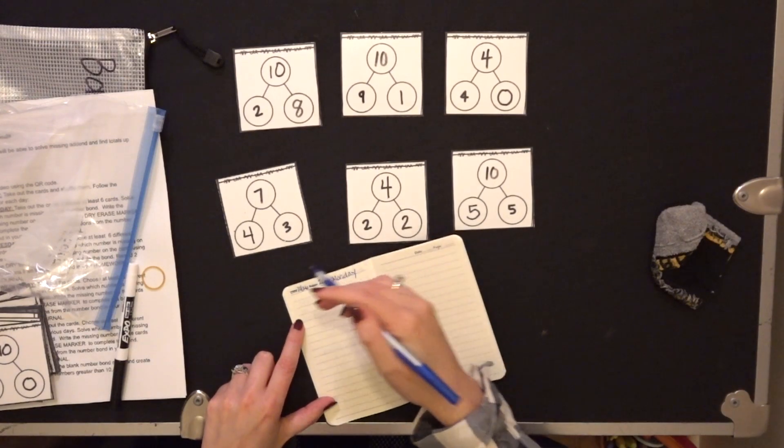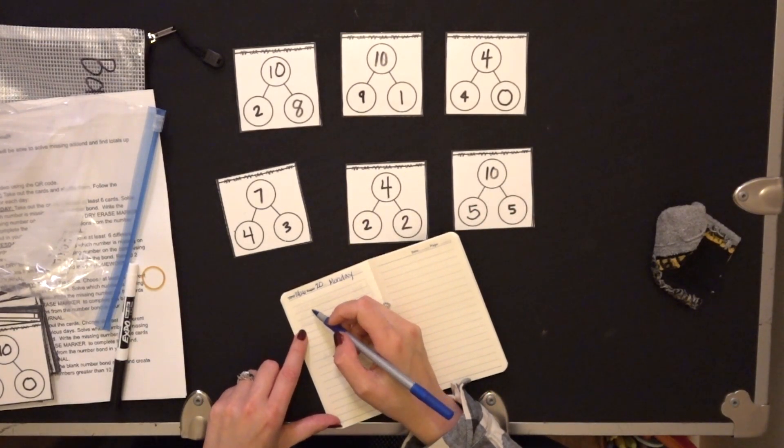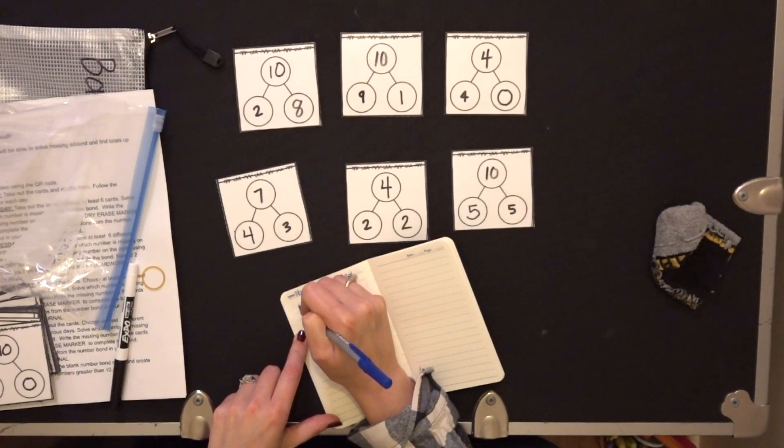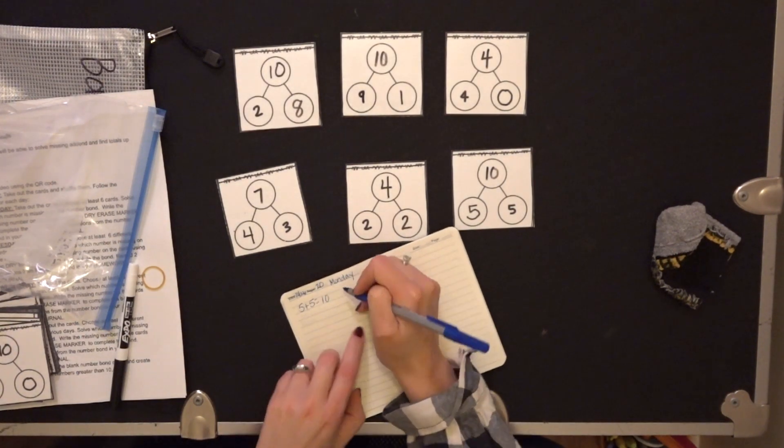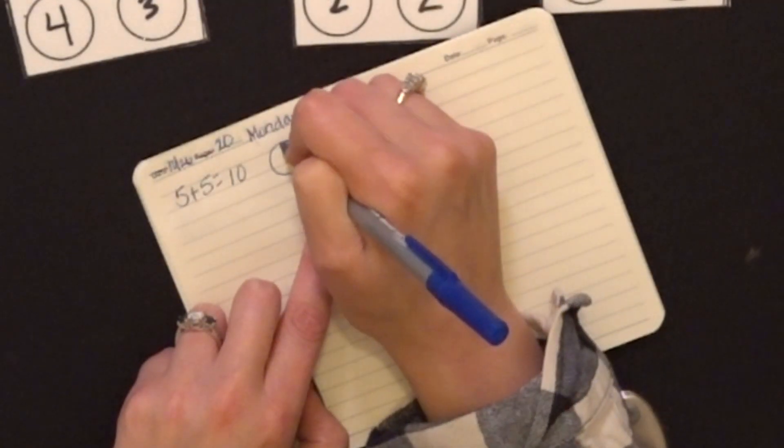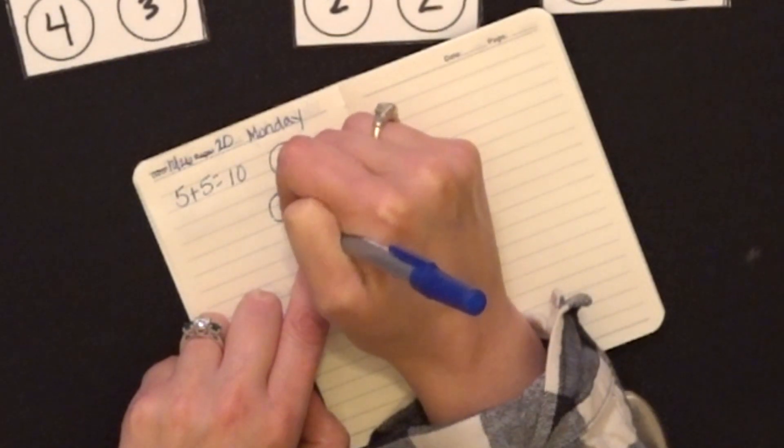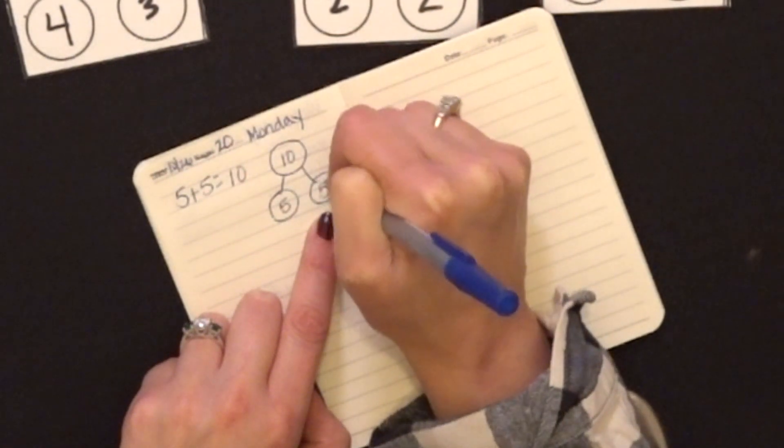I'm going to choose two of these to record in my journal. So I'm going to choose this one: five plus five equals ten. I'm going to draw my number bond. That was ten, and here's a part is five, another part is five.